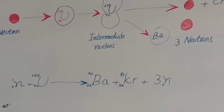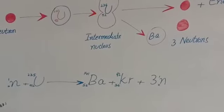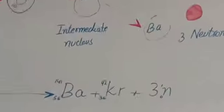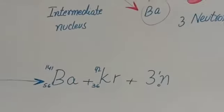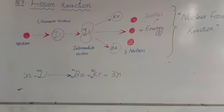Neutron 1,0 plus uranium-235,92. When uranium absorbs these slow-moving neutrons, it splits into two smaller nuclei: barium and krypton, releasing three neutrons.